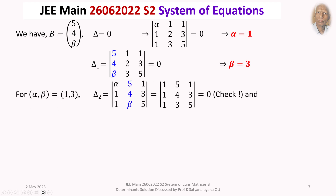For alpha equals 1 and beta equals 3, let us evaluate delta₂. Delta₂ is the same as delta with the second column replaced by (5, 4, beta). Substituting alpha equals 1 and beta equals 3, we get the determinant with rows (1, 5, 1), (1, 4, 3), (1, 3, 5). Expanding by the first row, the determinant value comes out to 0. Please check this yourself.